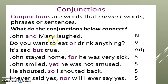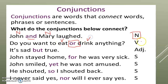Conjunctions connect words, phrases, and sentences. For example, nouns can be connected: 'Joan and Mary' — Joan is a noun, Mary is a noun, and 'and' is the connector joining them. Verbs can also be connected: 'Do you want to eat or drink?' — 'eat' and 'drink' are both verbs connected by 'or.' Adjectives can be connected too: 'It is said but true' — 'sad' and 'true' are both adjectives connected by 'but.'